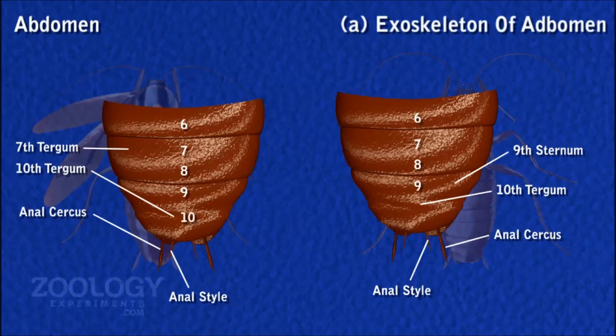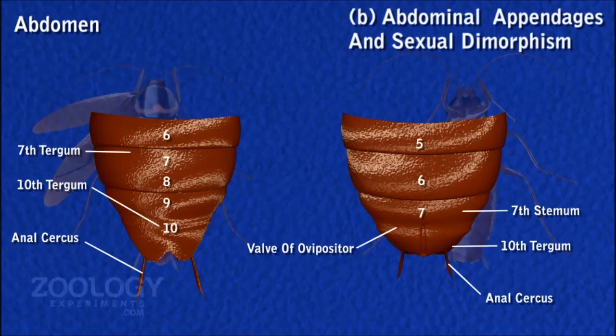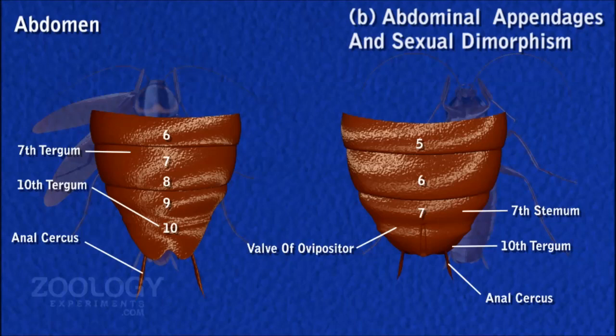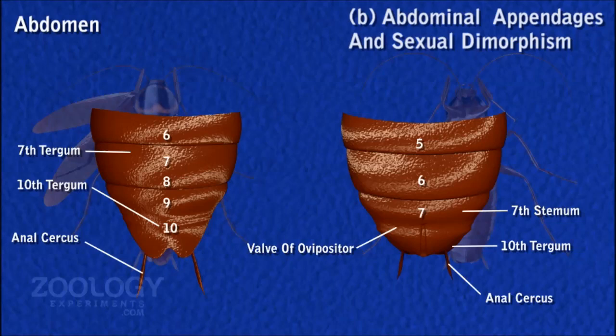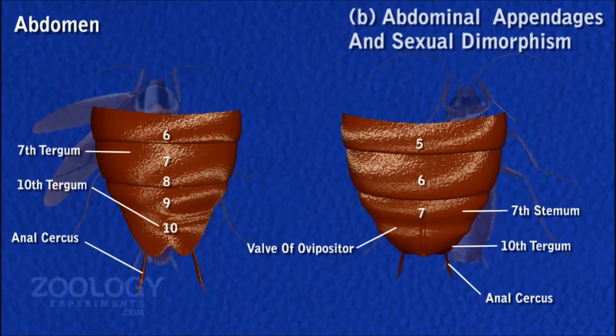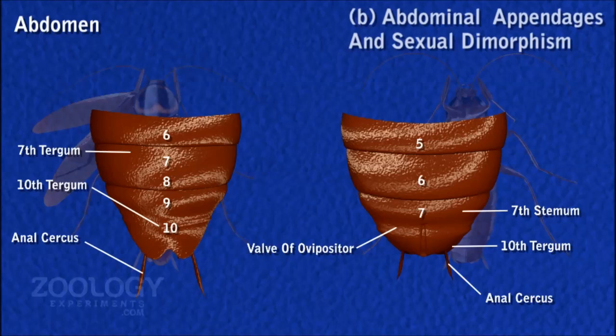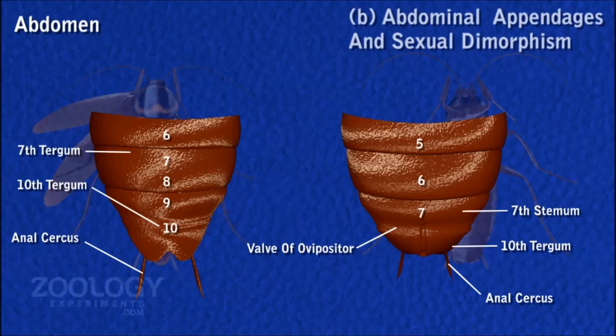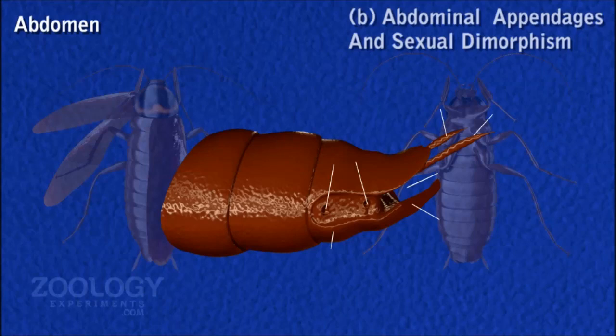The 10th tergum projects behind freely as a deeply notched bifid plate. In both sexes, the 10th segment bears a pair of small, filamentous, sensory anal cerci, which arise laterally — one on either side at the posterior end; each anal cercus is made up of 15 segments. In the male, an additional structure: the ninth sternum bears a pair of short, unjointed, thread-like anal styles, which are absent in the female. The genital aperture of the male is placed between the ninth and tenth sternum, surrounded by gonapophysis.